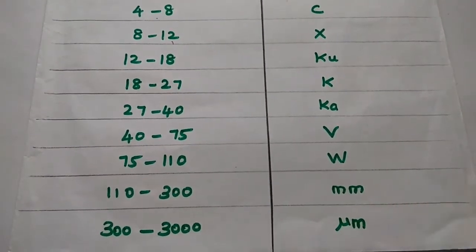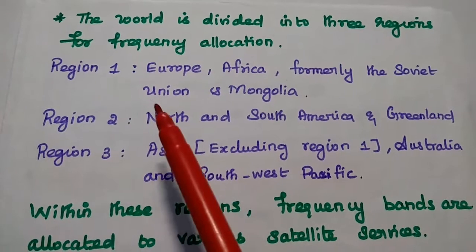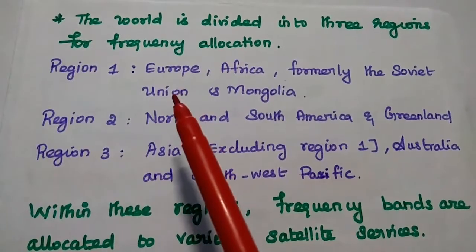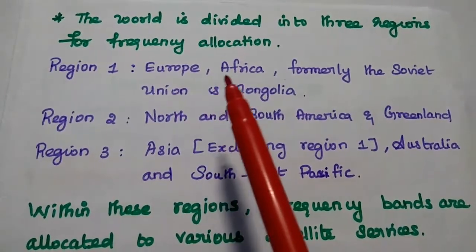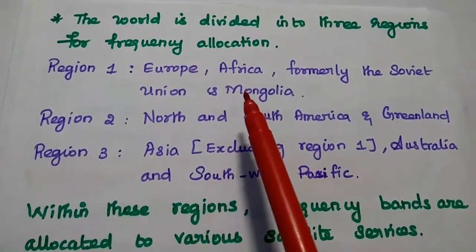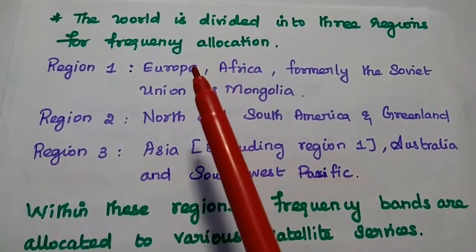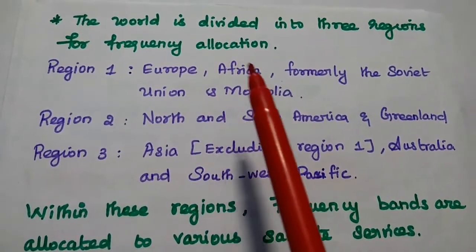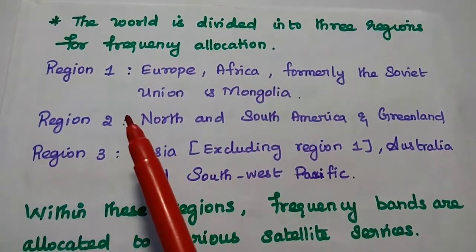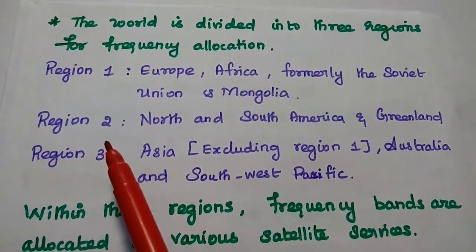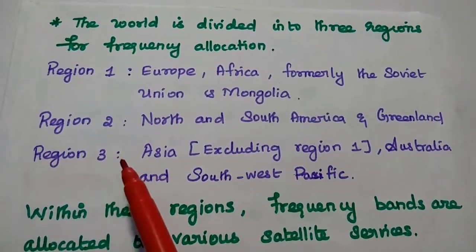In order to allocate frequencies for various satellite services, the world is divided into three regions: Region 1, Region 2, and Region 3.